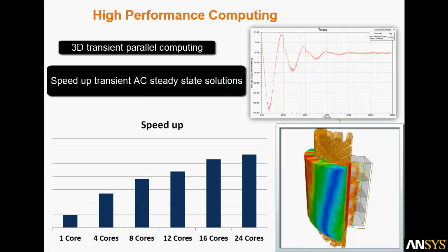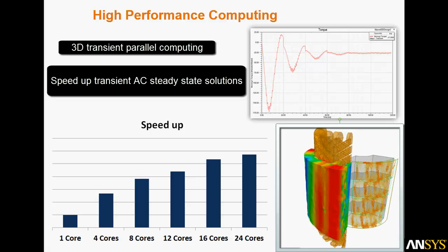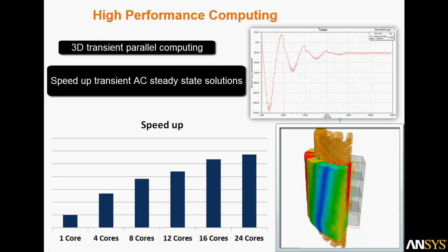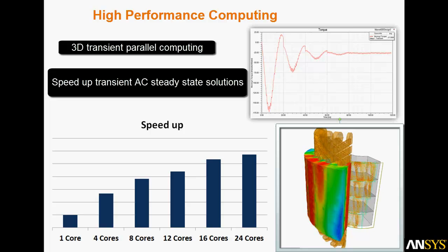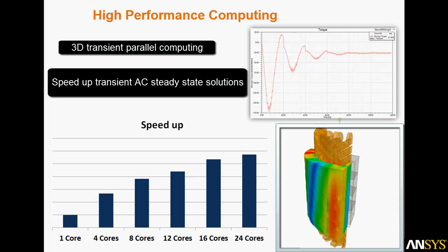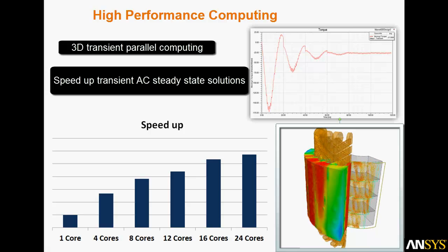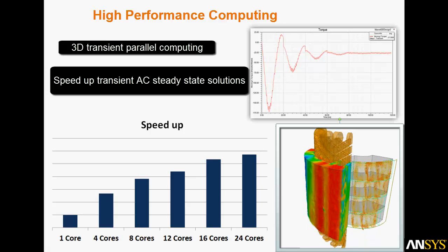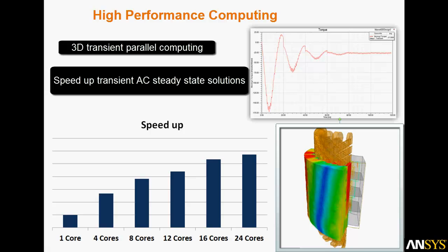High-performance computing speeds the solution of electric machines. ANSYS Maxwell can use parallel computing to speed 3D transient simulations. Here you see transient simulation of a large permanent magnet machine using parallel computing. The bar chart shows 5 to 6 times speed up and excellent scaling using multiple cores. We've also sped up the transient AC steady state solutions. Here you see an induction machine that reached steady state 24 times faster using an advanced new algorithm.